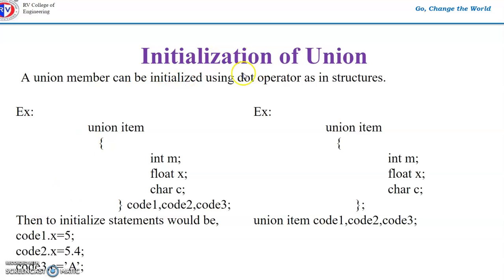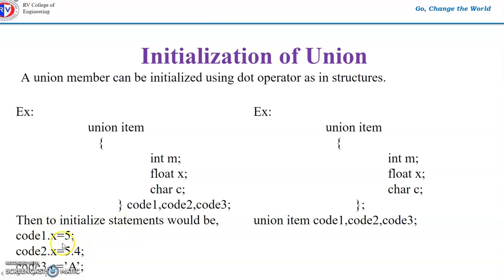Now let us see how to initialize a union variable. Suppose we have union item { int m; float x; char c; } and code1, code2, code3 are variables of type union item. To initialize: code1.m = 5, code1.x = 5.4, and code3.c = 'a'. When you do it this way, the last member that is initialized will hold the correct value for that union variable.